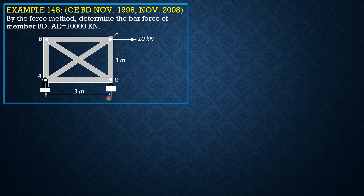But before that, let's solve for the reactions. Summation of forces X — this should be 10 to the left. And reaction at D times 3 equals 10 times 3, so this is also 10 upward. Summation of forces Y: at A it should be 10 downward.